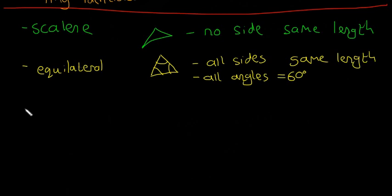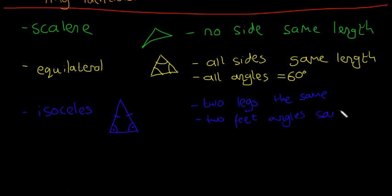Then we're going to have isosceles triangles. The two legs are the same and also the two angles here at the feet are the same. So two legs the same, two feet angles the same. People always forget that, but it's actually really important.